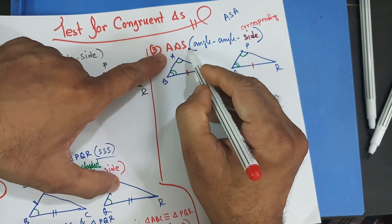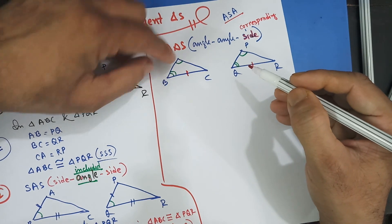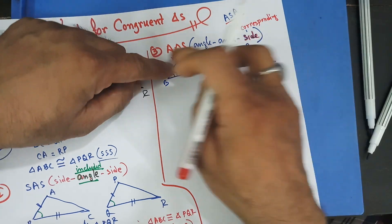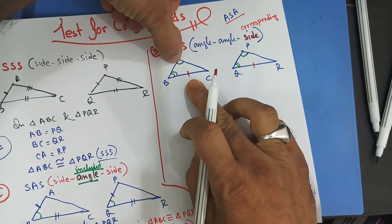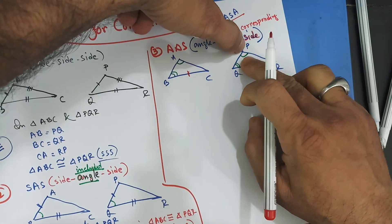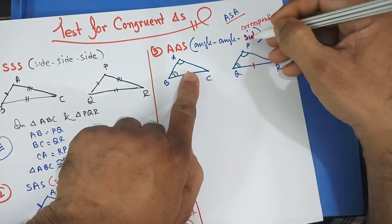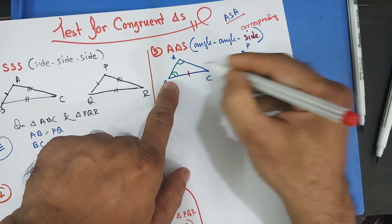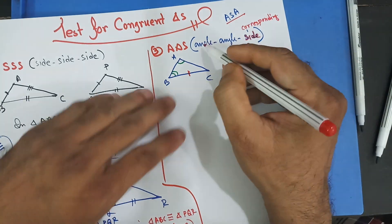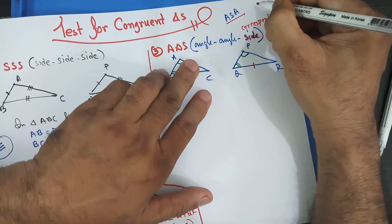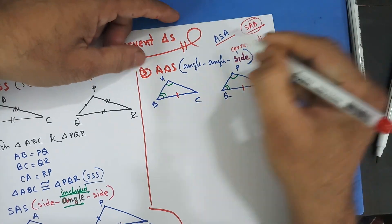So in this case we say angle, angle, corresponding side. You may also write it as SAA — side, angle, angle. Either form is fine; to avoid confusion I write angle, angle, corresponding side. Both AAS and SAA are acceptable.